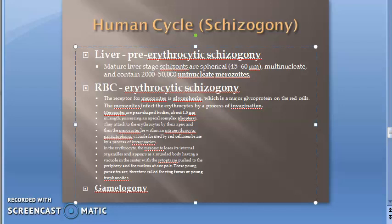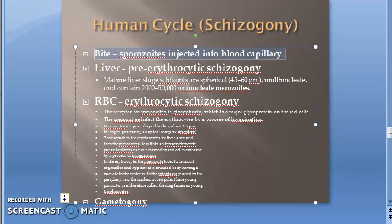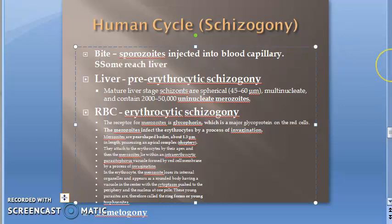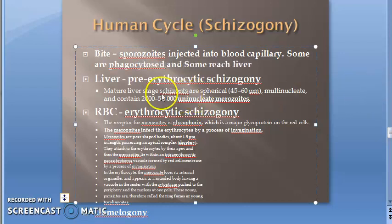The human is the intermediate host and the mosquito is the definitive host. Because of the bite of a female Anopheles mosquito, sporozoites may be injected into the blood capillary. Some sporozoites may be destroyed by phagocytes, and some reach the liver.